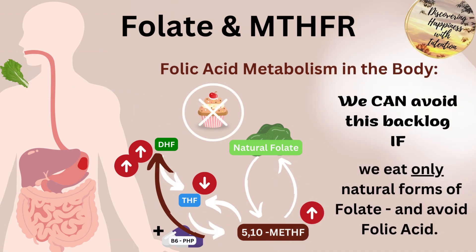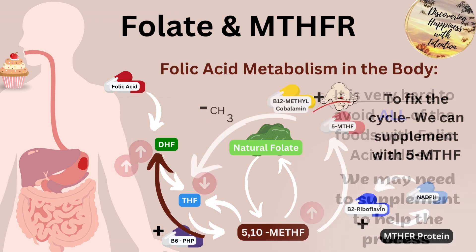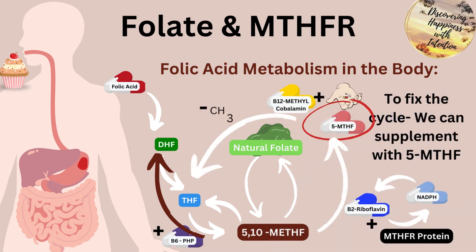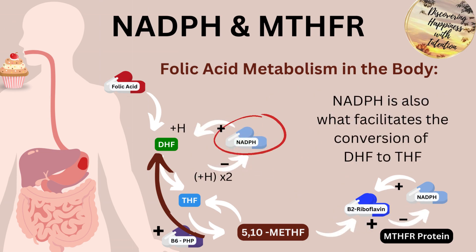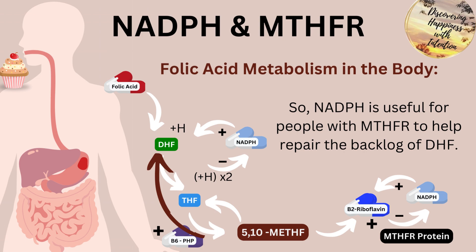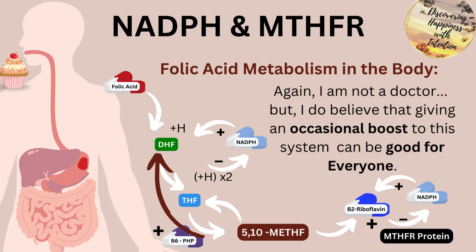We can avoid this backlog if we eat only natural forms of folate and avoid folic acid, but it is very hard to avoid all foods with folic acid, so we may need to supplement to help this process. In order to fix the cycle, we can supplement with 5-MTHF and with NADPH. NADPH is also what facilitates the conversion of DHF to THF, so it is useful for people with MTHFR to help repair the backlog of DHF. You may also want to supplement B6 and B2 to help boost this process. Again, I'm not a doctor, but I do believe that giving an occasional boost to this system can be good for everyone.